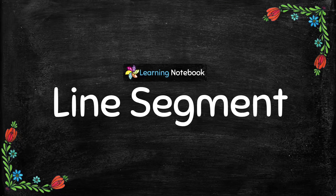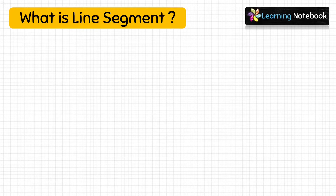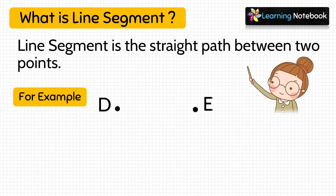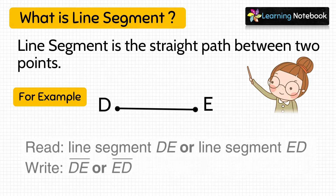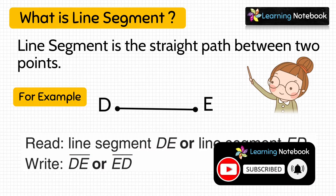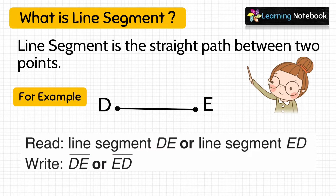Now let's understand line segment. A line segment is a straight path between two points — it is the shortest distance between two points. For example, with two points D and E, the line segment is the straight path between them. We read it as 'line segment DE' or 'line segment ED'; both ways are fine. We can write it as DE or ED with a small line segment over it. A line segment has a definite length.